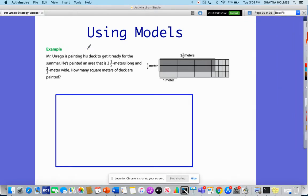Mr. Aguero is painting his deck to get ready for the summer. He painted an area that is 3⅕ meters long and ⅔ meters wide. How many square meters of deck are painted? Area tells me that I'm multiplying. So 3⅕ long, ⅔ meters wide. That tells me I'm going to be multiplying these together.